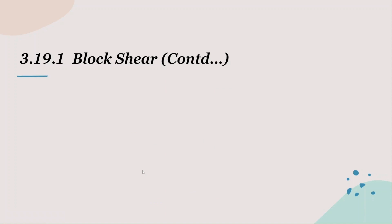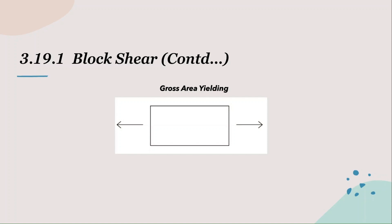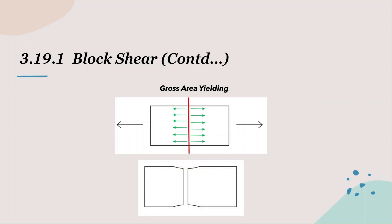Before we learn what block shear is, let's revise gross area yielding and net area rupture. Imagine a plate without holes that is subjected to a tension force. If you take any random section in the plate, you will notice pure tension force throughout the width of the plate. The green arrows are the tensile stress occurring on that section. If the force keeps increasing, you will see necking in the section before it fails at its tensile stress.